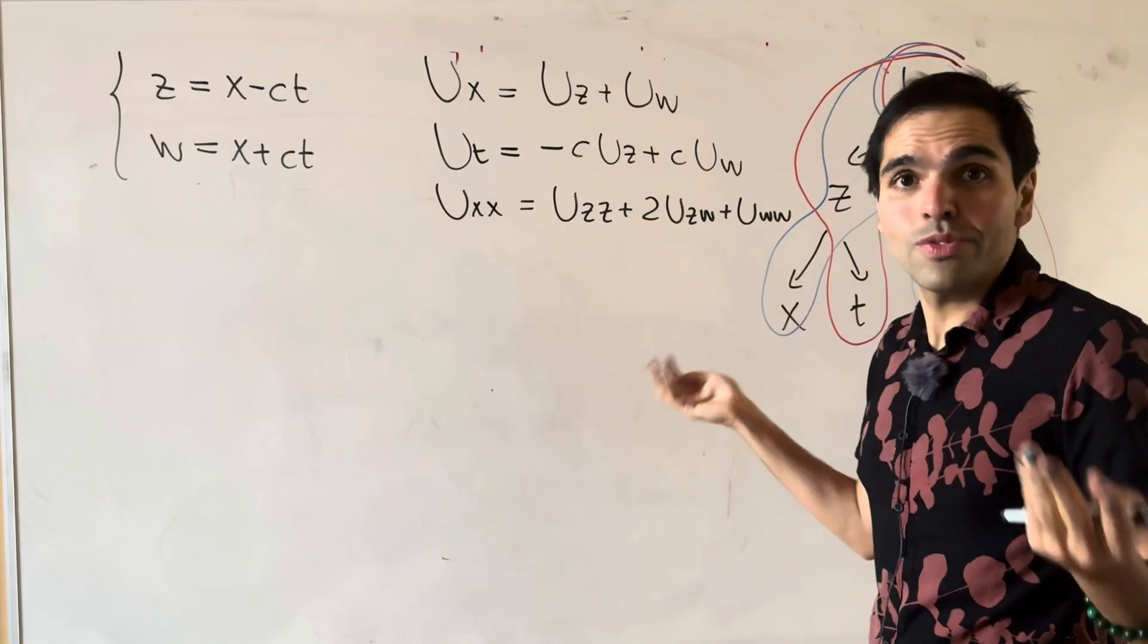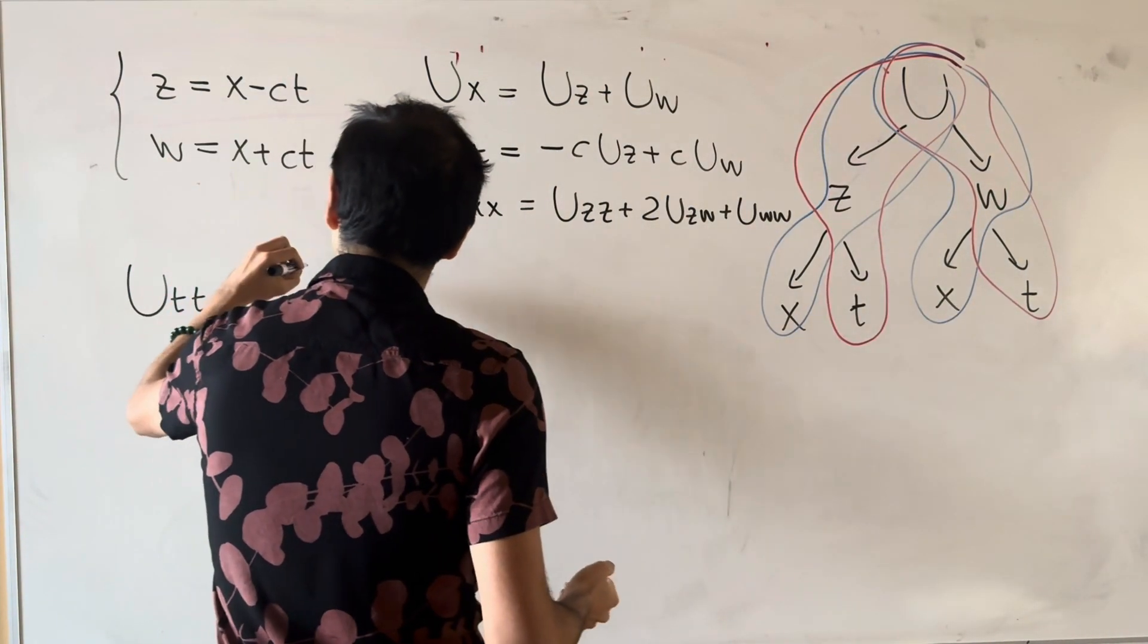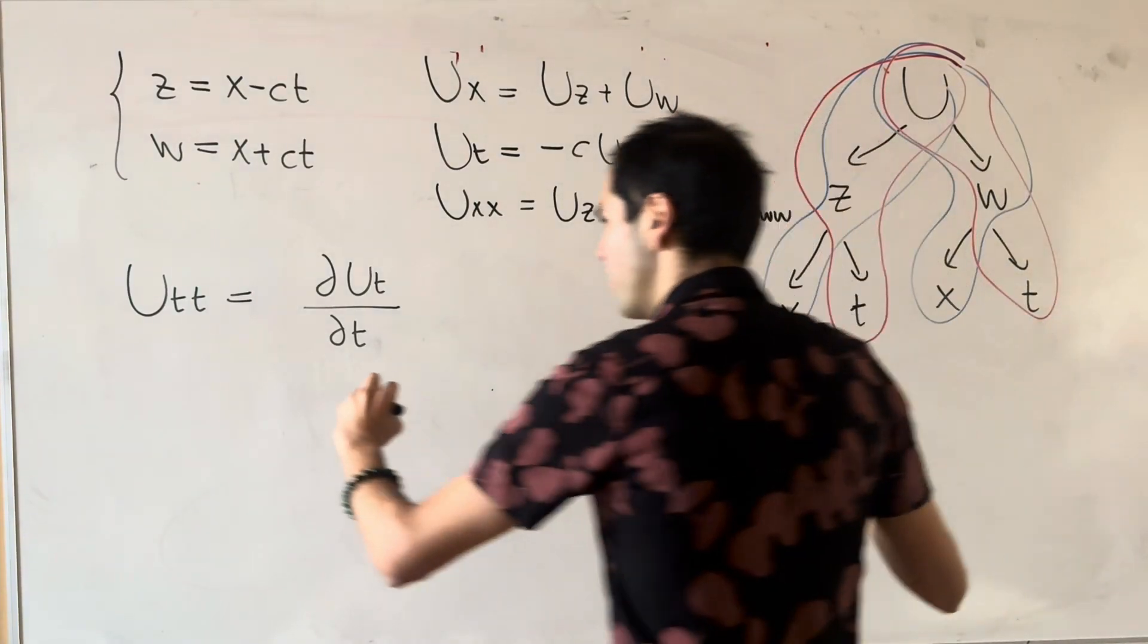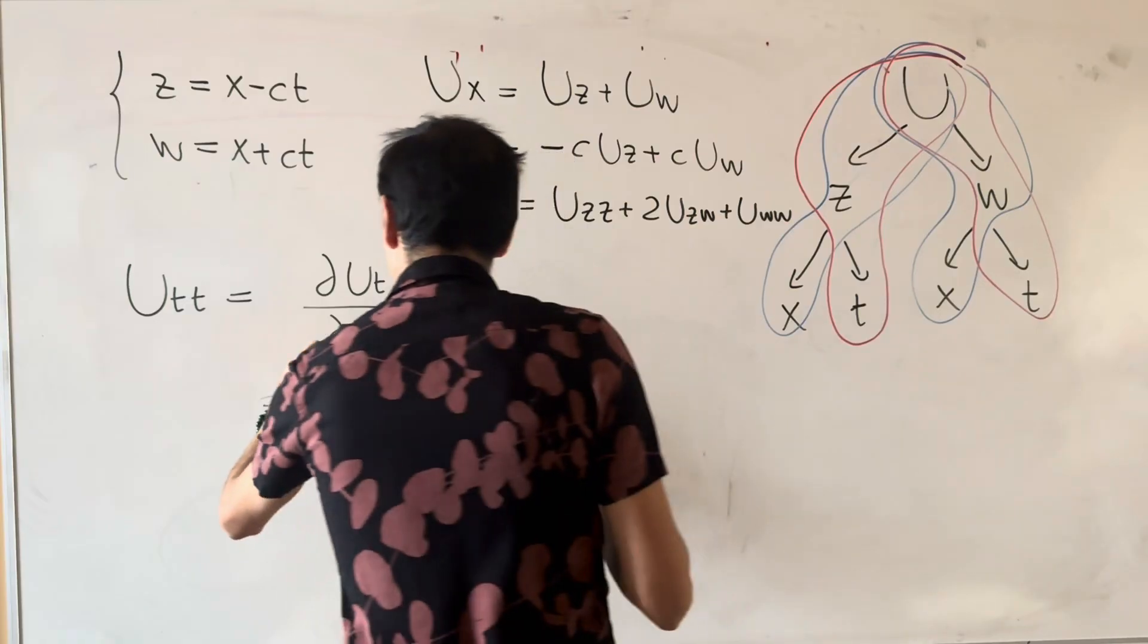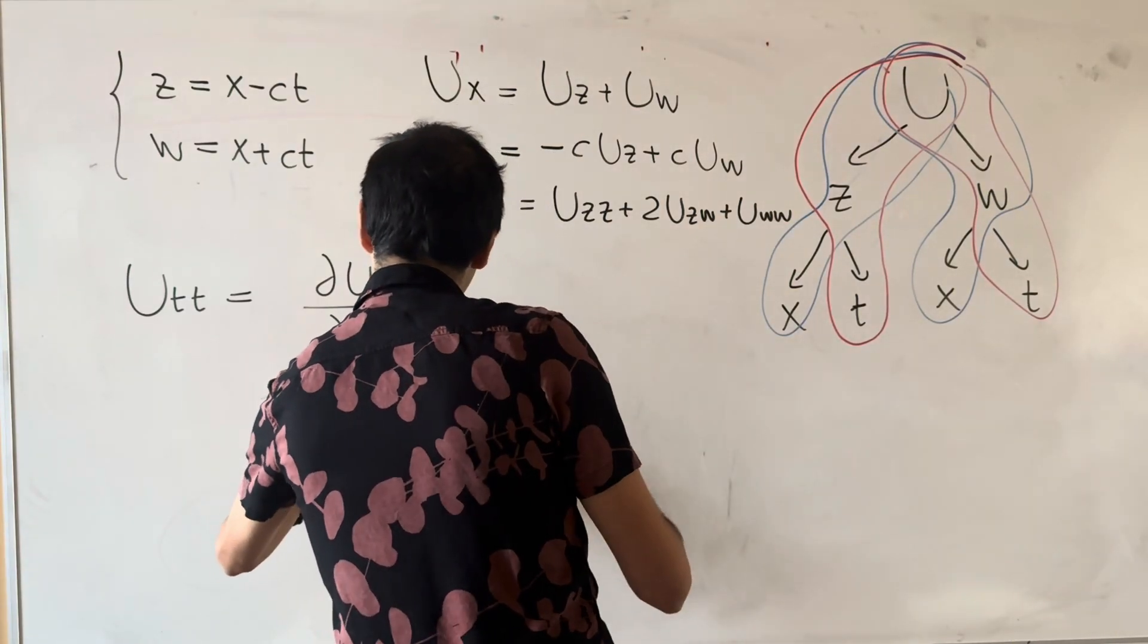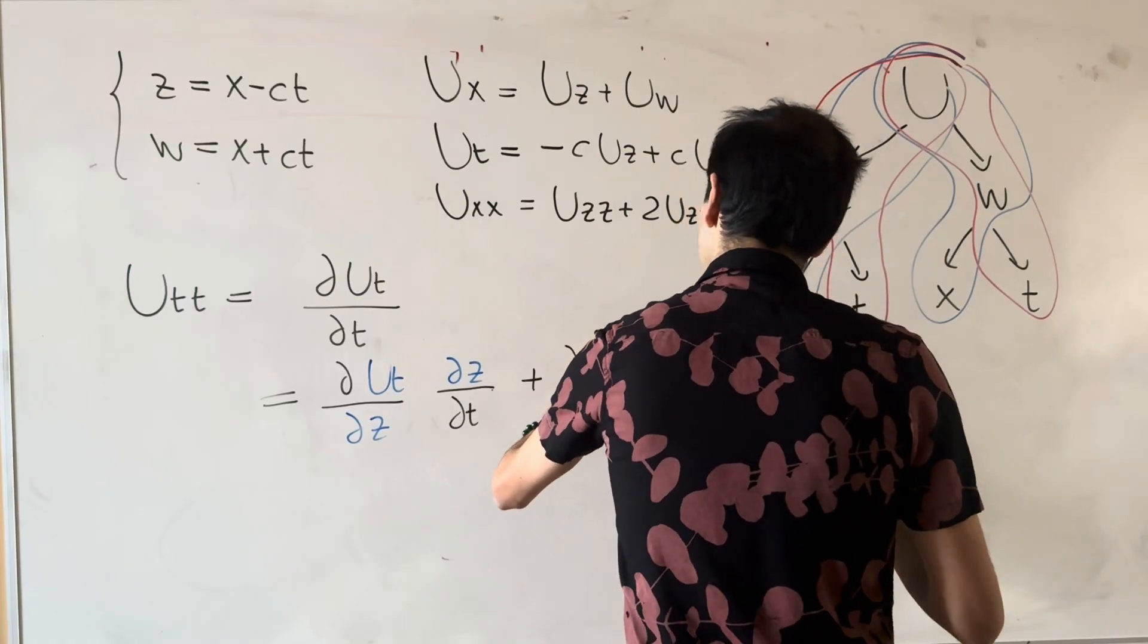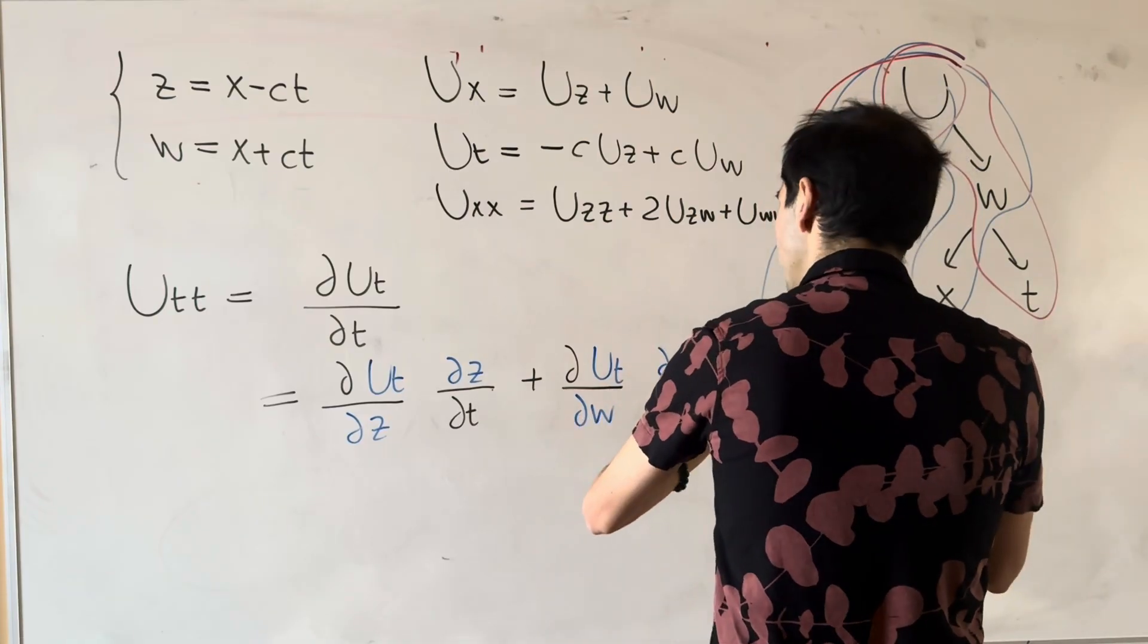Okay, so in this case, once again, same spiel. So U_tt is dU_t over dt. And once again, follow the chain rule diagram. So it becomes dU_t over dz times dz over dt, plus dU_t over dw times dw over dt.